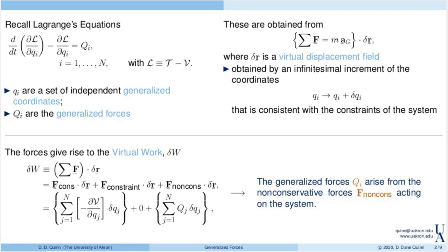When we developed Lagrange's equations, we started off with momentum balance, just for a particle, but it does generalize to rigid bodies fairly easily. We took a dot product with what we called a virtual displacement field, the delta r term. This virtual displacement field is obtained by an infinitesimal increment of the coordinates — we take the current value of the coordinates, change them by an infinitesimal amount, and that change produces a displacement of the system consistent with the constraints.